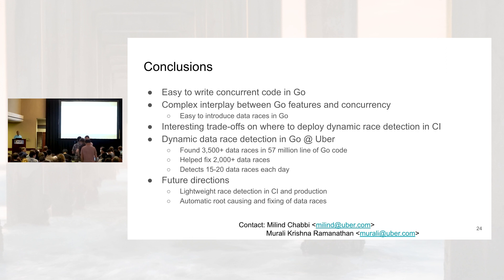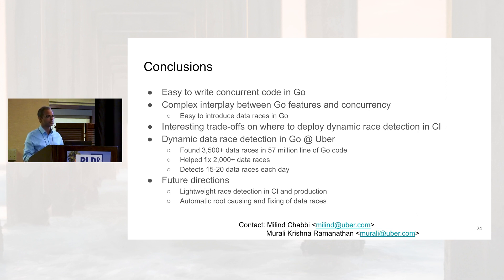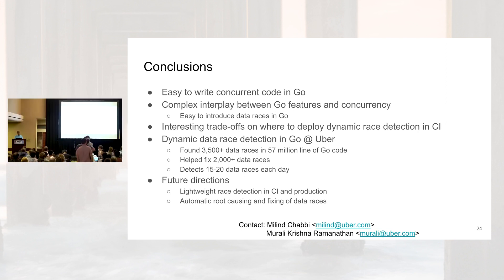Q: At Meta we have also noticed that non-deterministic race detectors yield flaky tests where sometimes you detect a race, sometimes you don't. Do you have ideas about fixing that? If you had a deterministic race detector, would you use it in CI instead of daily runs? A: It would make deployment easier as long as overheads are low, because there are strict timelines — when someone submits a patch, they want results within minutes. If it is within minutes or tens of seconds, it would be easier to deploy into a CI system. The limitation was mainly compile-and-run-all-affected-tests time.